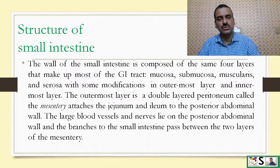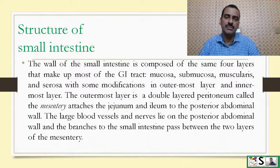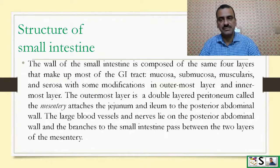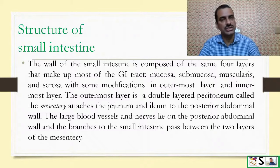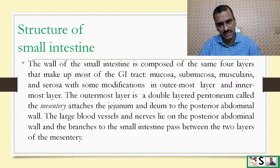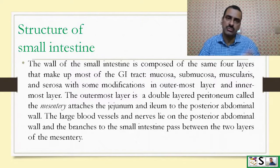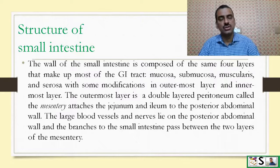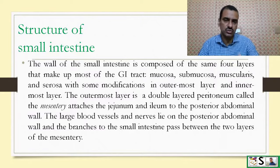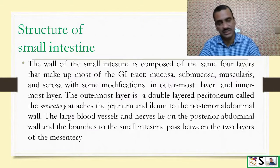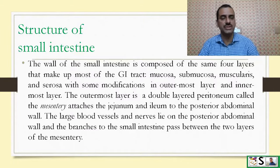The outermost layer is a double-layered peritoneum, also called the mesentery, which attaches the jejunum and ileum to the posterior abdominal wall. The large blood vessels and nerves lie on the posterior abdominal wall, while the branches of blood vessels to the small intestine lie between the two layers of this mesentery or peritoneum.